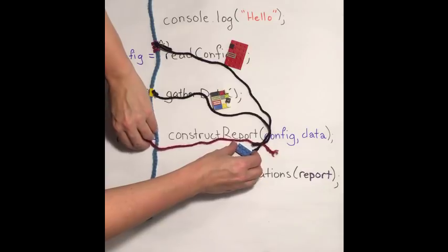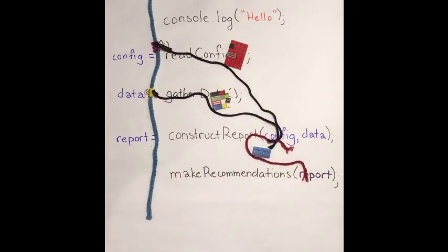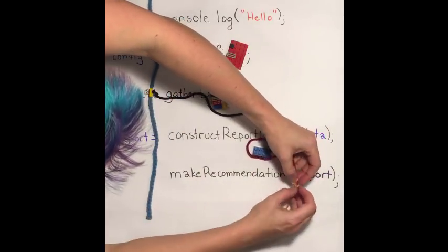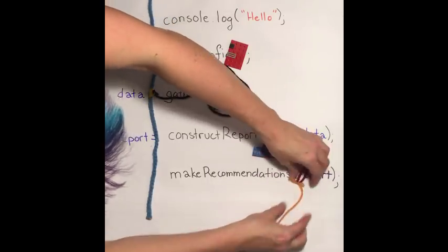Construct report returns the end of the string. We pass that into make recommendations, and make recommendations ties its processing onto the end of that string. This is easier for the promises library than it is for me with yarn.